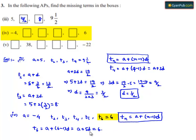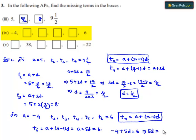Let us find the value of d. We have a = minus 4, so substituting: minus 4 + 5d = 6. This implies 5d = 6 + 4 = 10, which gives d = 10/5 = 2.